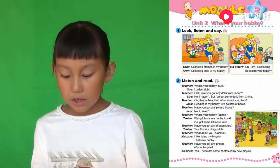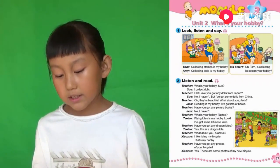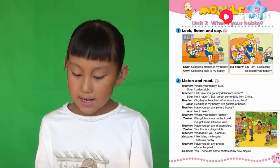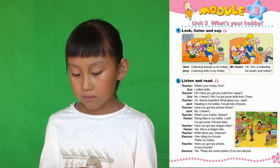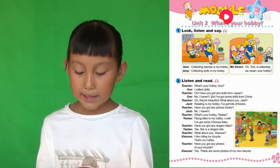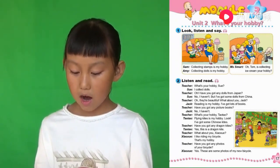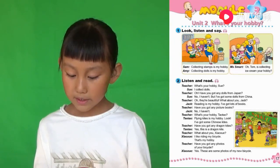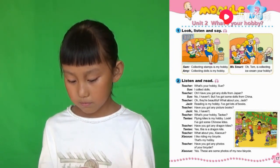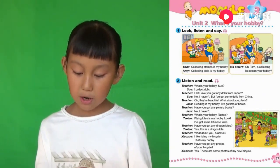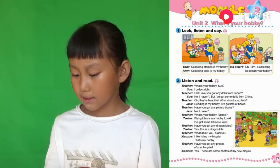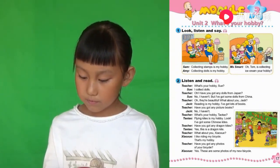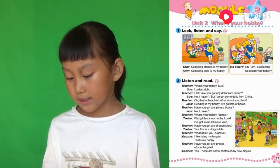What about you, 小学？那么你呢？I like riding my bicycle. 我喜欢骑我的自行车。That's my hobby. 这是我的爱好。Have you got any photos of your bicycle? 你有没有任何你自行车的照片？Yes, these are some photos of my new bicycle. 是的，这些是我的新自行车的照片。